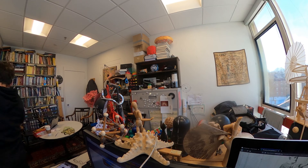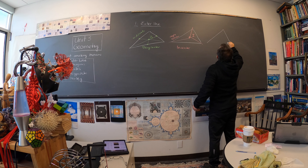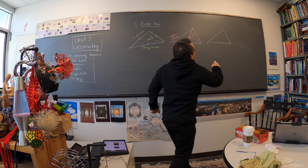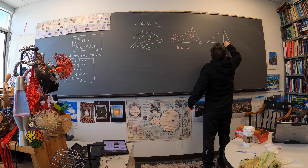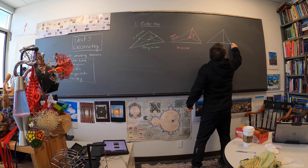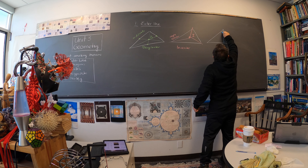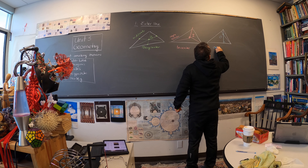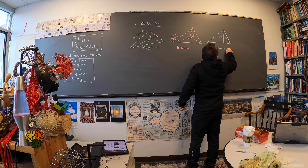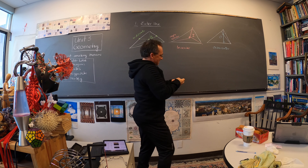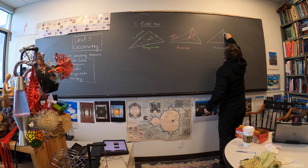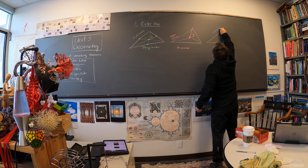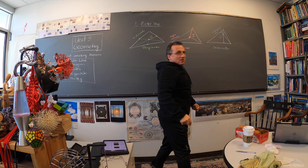The third point is the orthocenter. What we do is draw the orthogonal perpendicular lines. Let's call this O. This is the orthocenter — these are the heights, or orthogonal heights, through the opposite point.